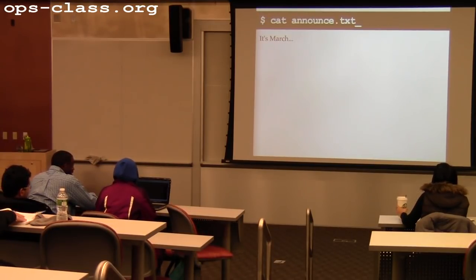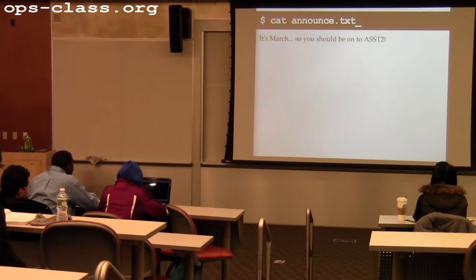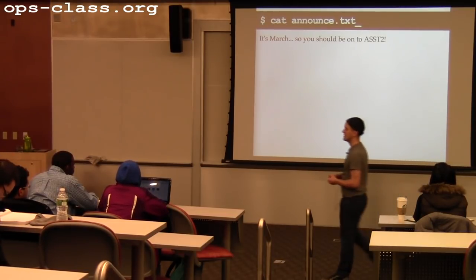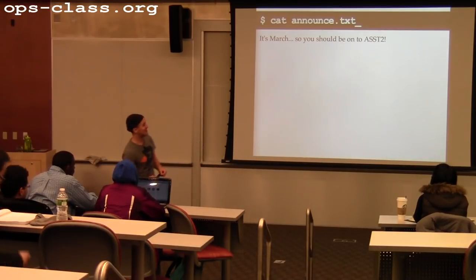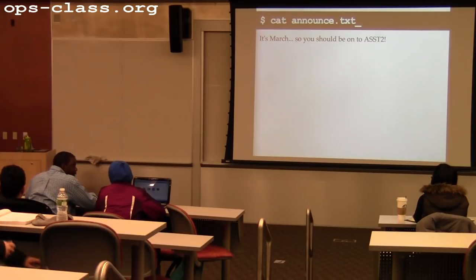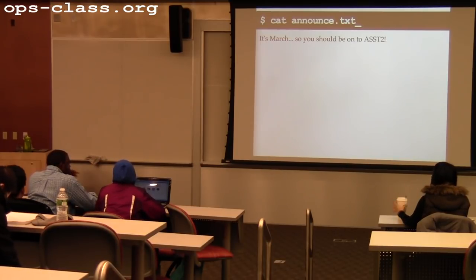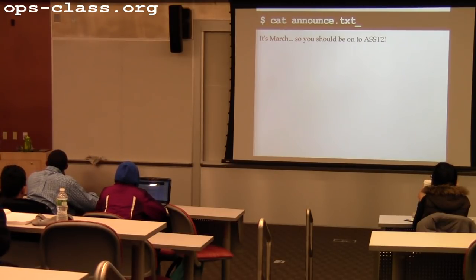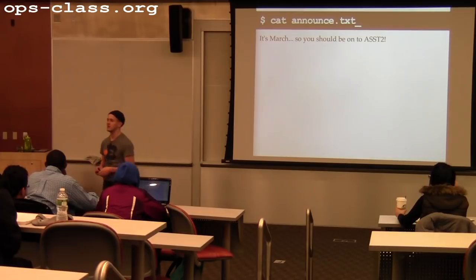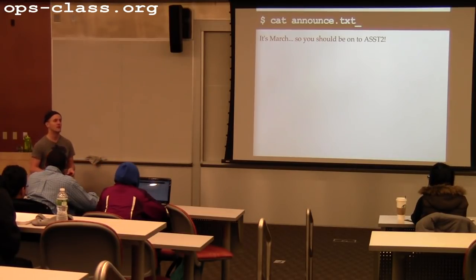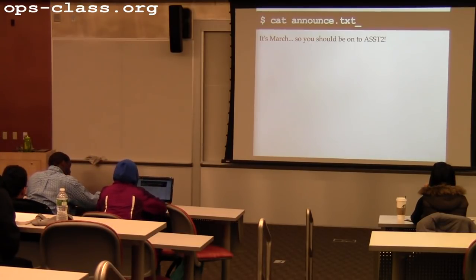So it's March, which was our target for having you onto assignment two. To avoid scaring myself, I won't ask for a show of hands of how many people are finished with assignment one. But if you're not wrapping up assignment one, then you are behind. The last two assignments are hard — they're the meat of the class. The first two are maybe 20% of the overall programming work. The last two are the heavy hitters, so you need to wrap up assignment one, get the primitives done, and get on to assignment two.